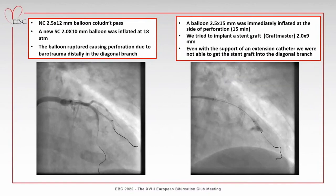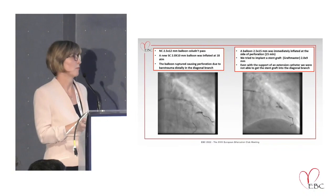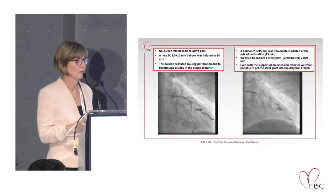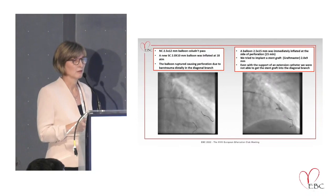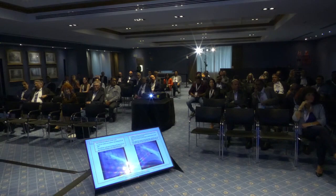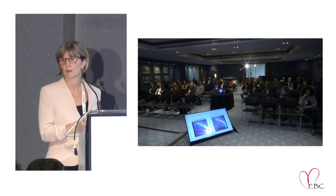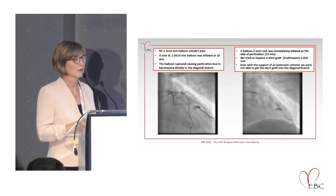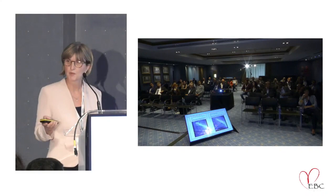The balloon ruptured and I was very surprised to find a perforation when the balloon was in the bifurcation - the rupture caused barotrauma. So now I had a problem I wouldn't have had if I'd only done a rePOT and stented proximally. I took a 2.1 x 15mm balloon. Was the balloon positioned very distal to the bifurcation? No, I was ballooning in the bifurcation, not distally.